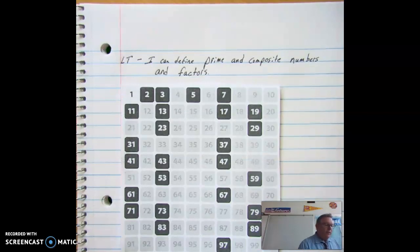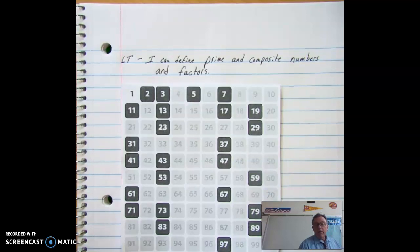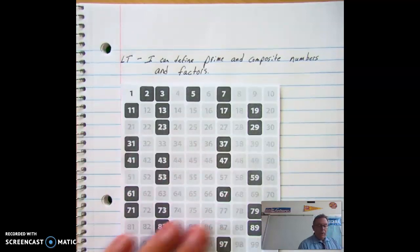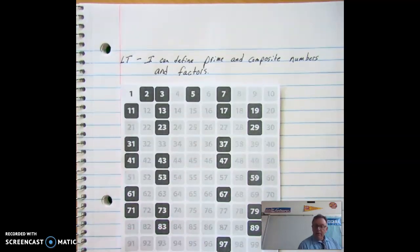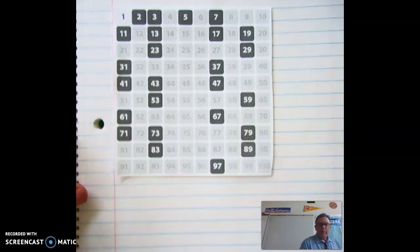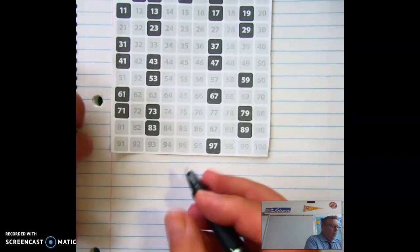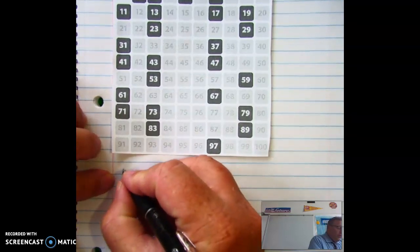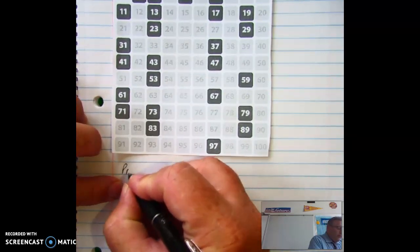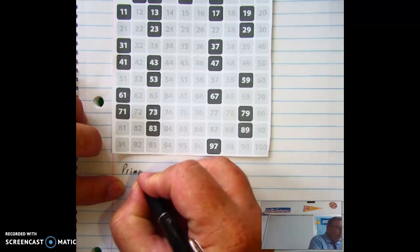All right, so the next thing we want to do is we want to talk about our types of numbers. And the good news is this chart is going to help us and it's going to be really straightforward. So I'm going to show you how you can see it. We're going to come up with our definition. So write this time, please, a prime number.